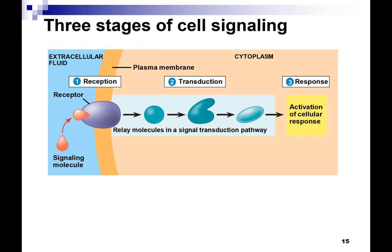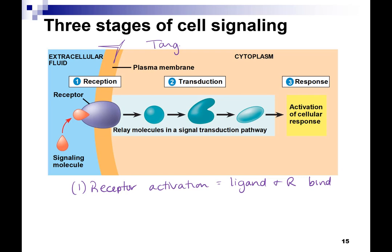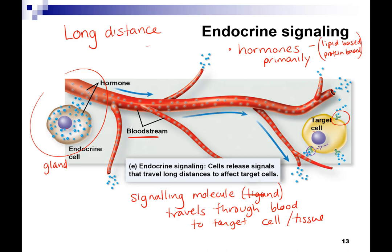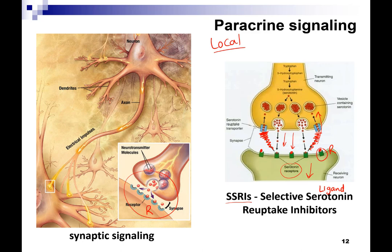Receptor activation just means the ligand and the receptor are binding — they're interacting. All of this is happening inside the target cell. We talk about reception, then signal transduction, then cellular response. Receptor activation means the receptor changes shape in order to pass on the signal. A really important concept in biology is structure equals function — right now the receptor's structure is inactive, and when it changes shape it has a new function and it's activated.